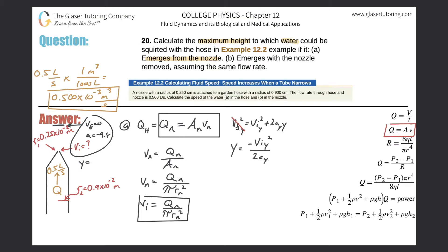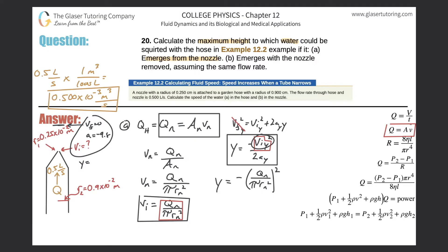The negative sign is not canceled by squaring since vi² is not in parentheses with the negative. However, the acceleration due to gravity is negative, so the double negative cancels and gives a positive height, as expected. Taking the reference point at the nozzle as zero height, we substitute vi = Q_n / (π·r_n²) into the equation.